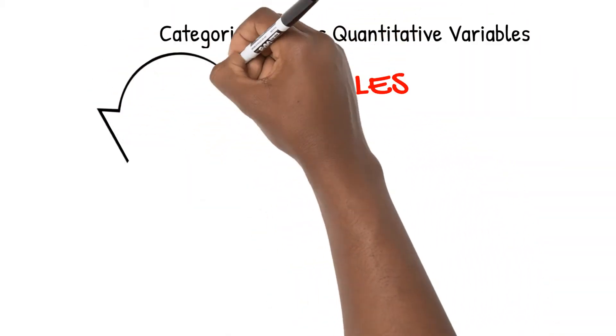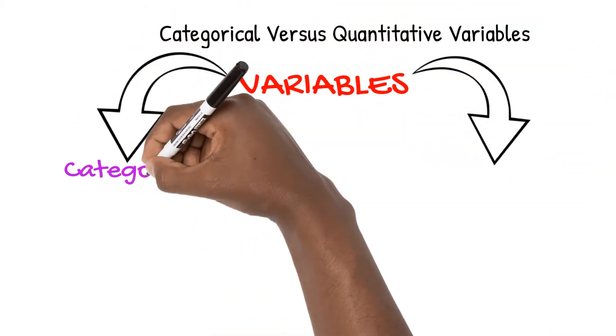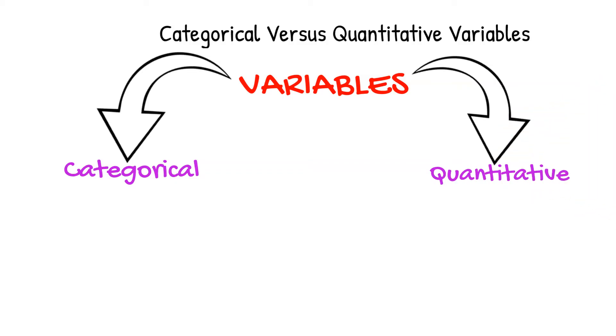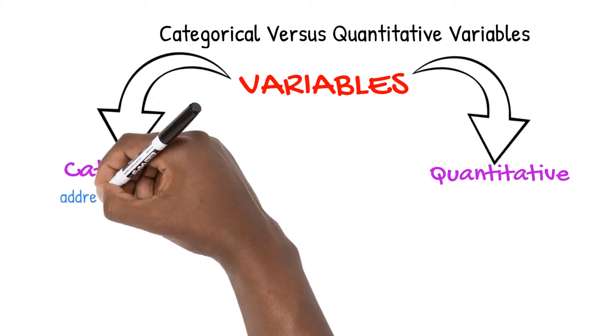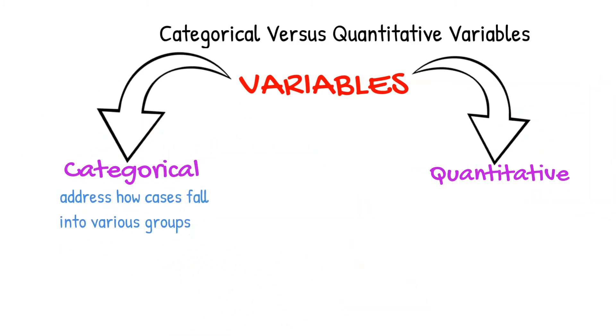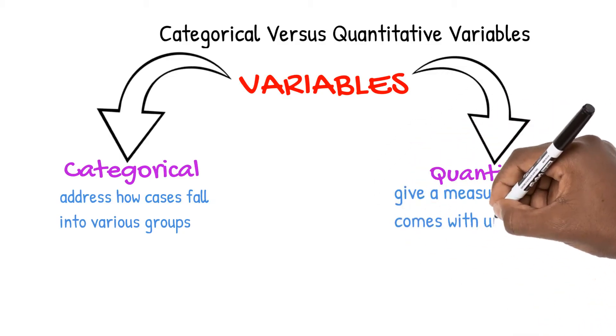There are two major types of variables in statistics: categorical and quantitative. Categorical variables address how cases fall into groups, while quantitative variables give a measurement and come with units.